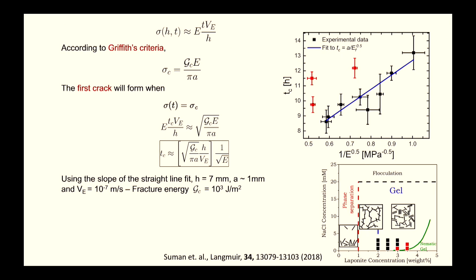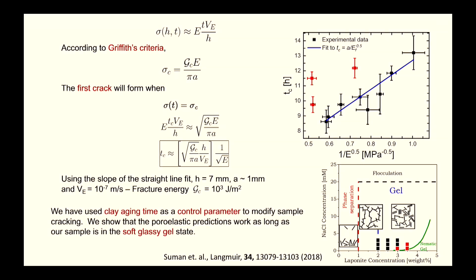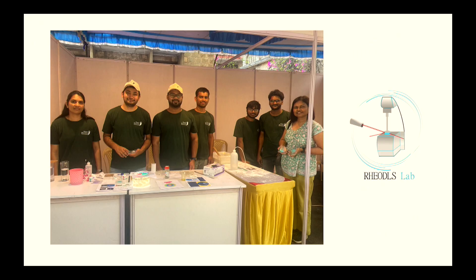Outlier red points outside the model prediction correspond to samples near the phase boundary between the gel and nematic gel-like phase in the Laponite phase diagram. During desiccation, these samples are thrown into the nematic gel phase, making the poroelastic model inapplicable. The conclusion is that clay aging can be used as a control parameter for desiccation cracking, and poroelastic models work as long as the sample remains in the soft glassy state.